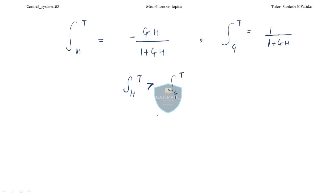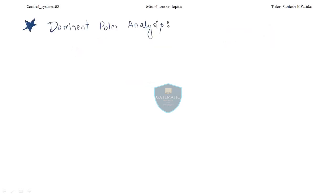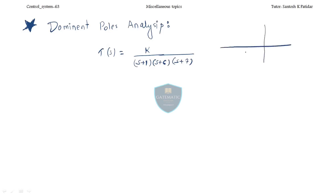Next, the topic is dominant pole analysis. We do not have many questions from this background, but for conceptual clarity it is important. Suppose you are given a transfer function: K / [(S+1)(S+6)(S+7)]. This transfer function has three poles: at −1, −6, and −7.